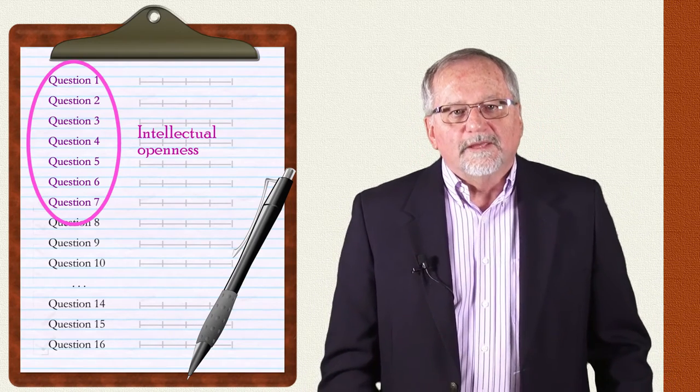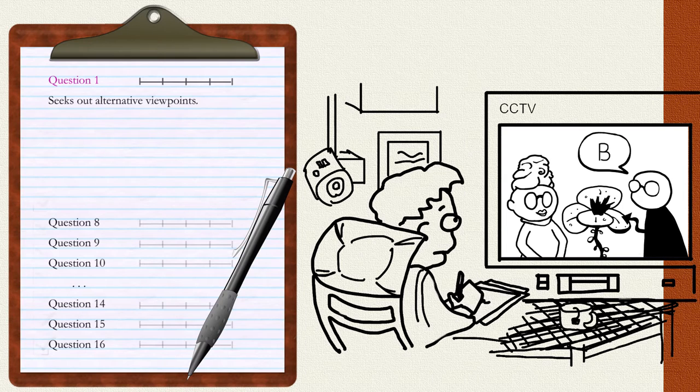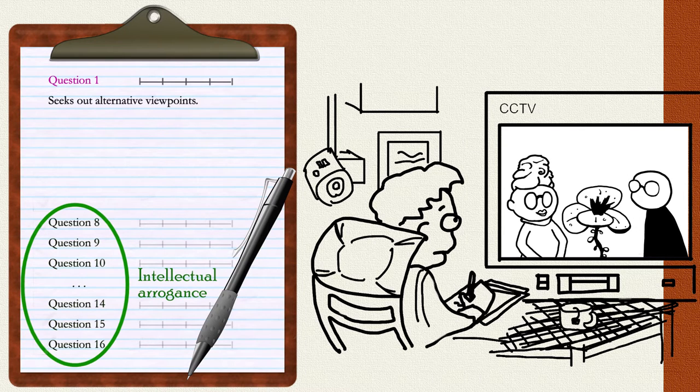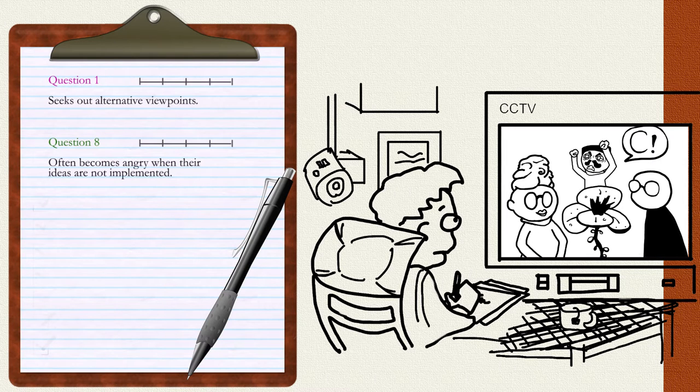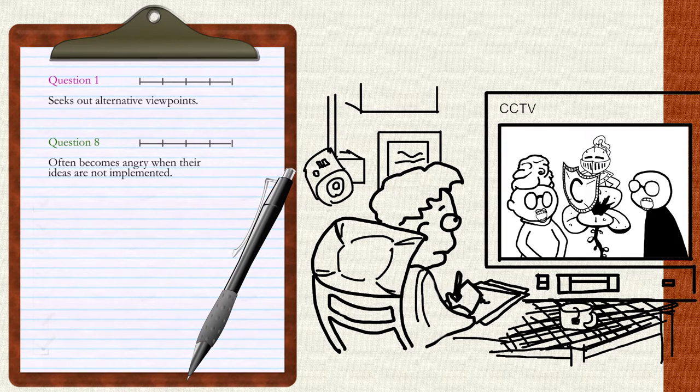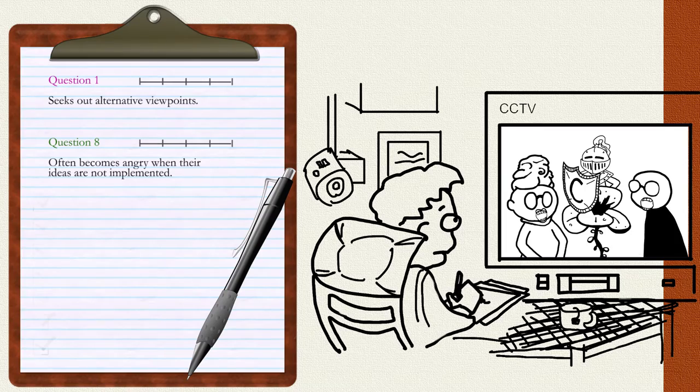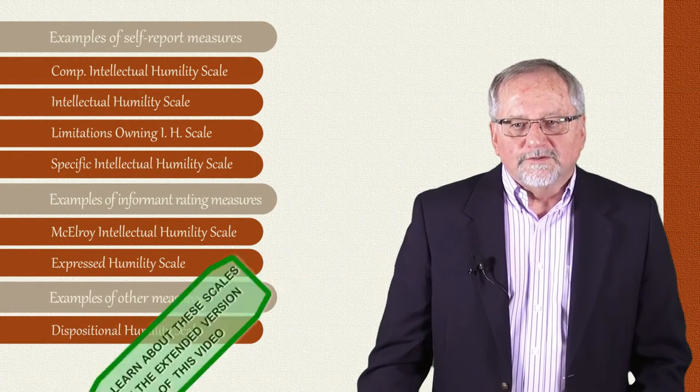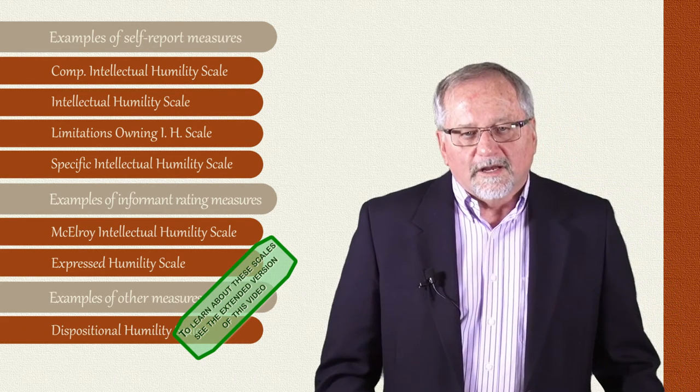An intellectual openness scale with such items as seeks out alternative viewpoints, referring to a targeted other, and the intellectual arrogance subscale with items such as often becomes angry when their ideas are not implemented. The two subscales correlate highly with each other. To date, this particular scale has been utilized to measure attitudes towards religious out-groups as well as perceptions of the intellectual humility of religious leaders.